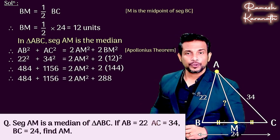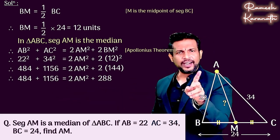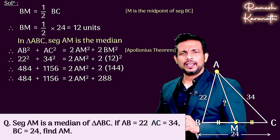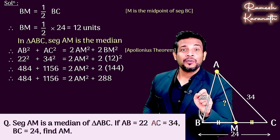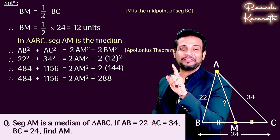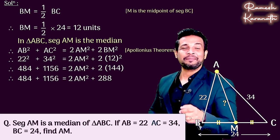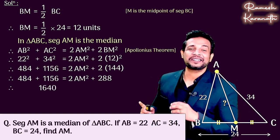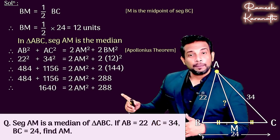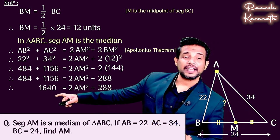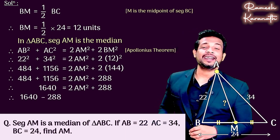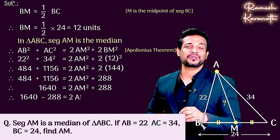Left hand side we can simplify. 484 plus 1156: 4 plus 6 is 10, carry 1, 8 plus 5 is 13, plus 1 is 14, carry 1, 4 plus 1 is 5, plus 1 is 6. That is 1640. That is equal to twice of AM square plus 288. Now 288 we will transpose here.